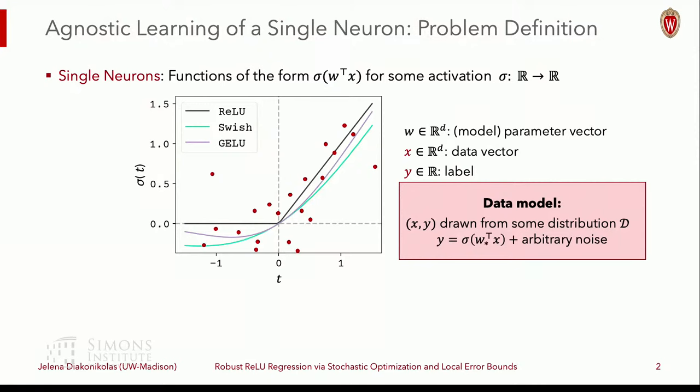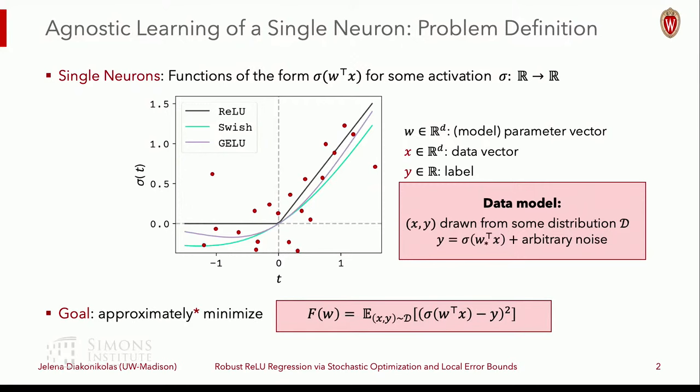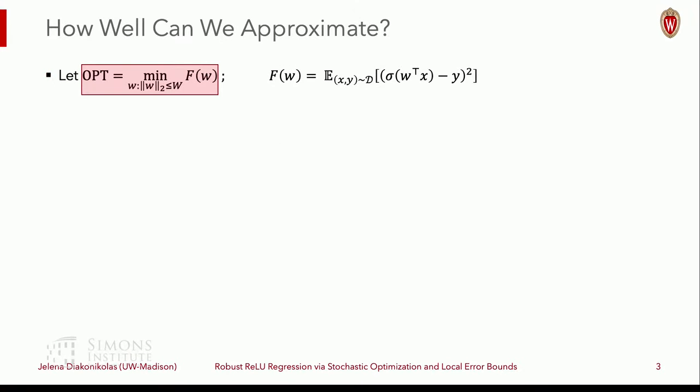Our goal, and the reason why there was a word regression there, is to approximately minimize the mean square loss of the model. So just what we are assigning to the data minus the label. And this approximately, what it means, we'll see in a little bit, because as you'll quickly find out, there isn't that much we can hope for. Let's see what we can actually do, what we can and cannot do.